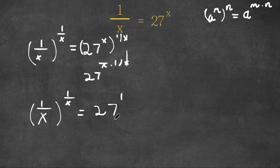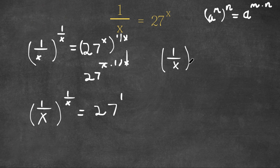Now, 27 is the same thing as 3 to the power of 3. So now we have 1 over x to the power of 1 over x is equal to 3 to the power of 3.